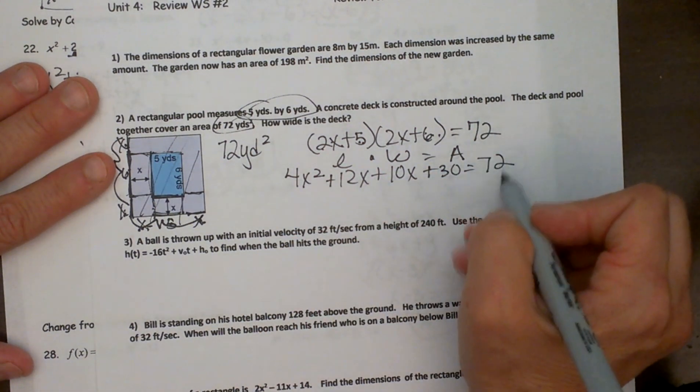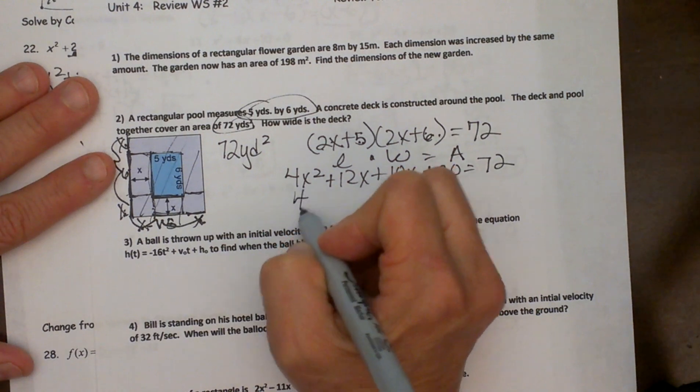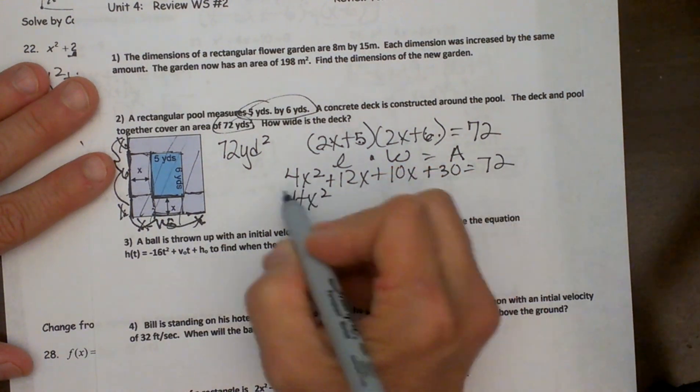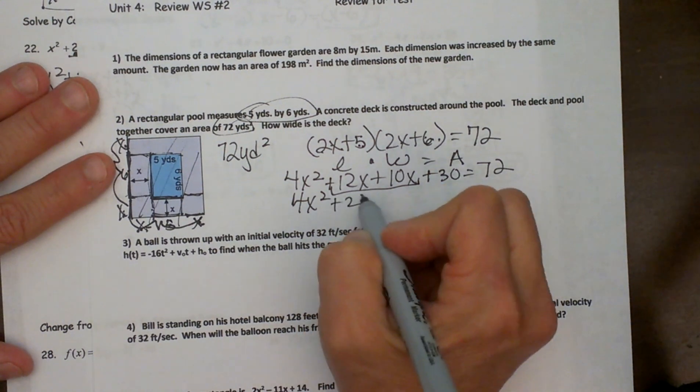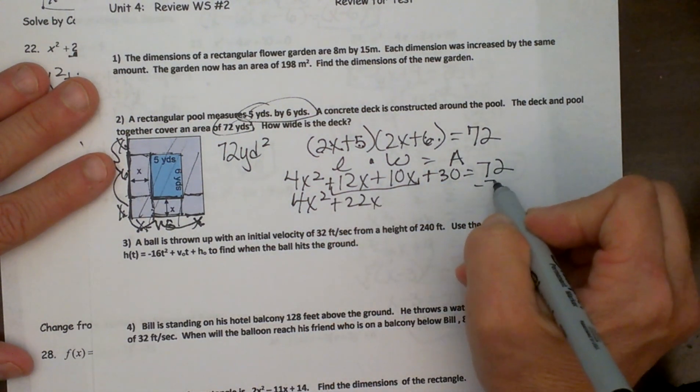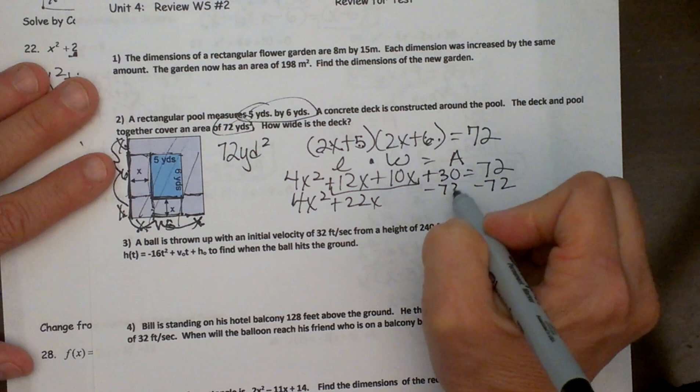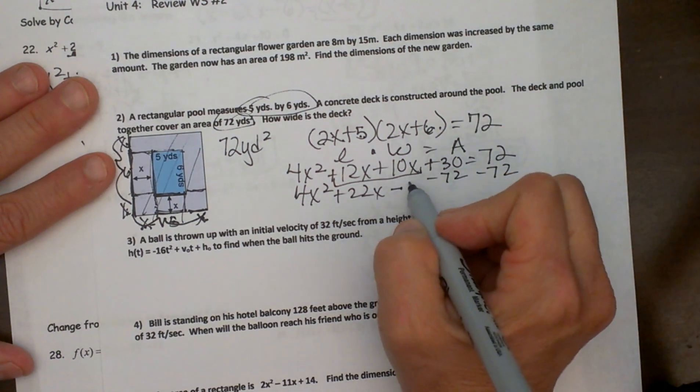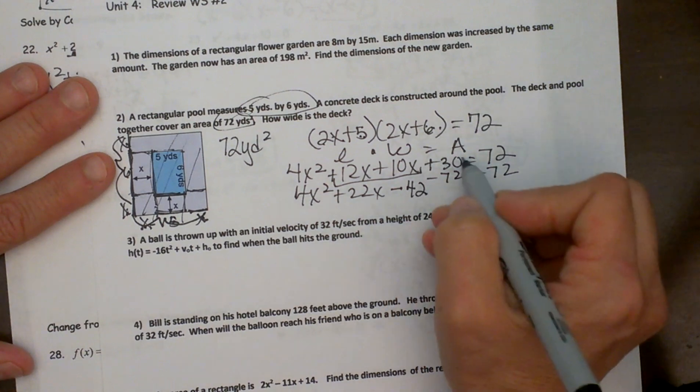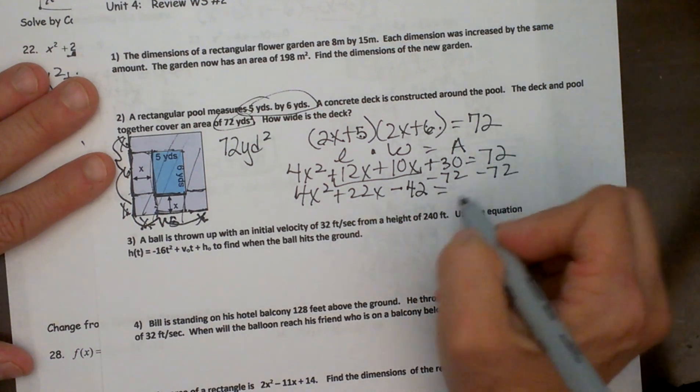So there is our FOILed out quadratic. Now let's combine some terms and bring this seventy two over because we have to solve it now. So we are going to bring our four x squared down and then we are going to combine our middle terms so plus twenty two x. And then I am going to bring this seventy two over with the thirty because they are my constants. And that gives me negative forty two is equal to zero.